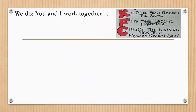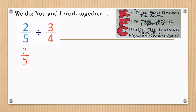Now we're going to work together. What's the first thing we do? Keep the first fraction — write 2/5 just the way it looks. Flip the second fraction — bottom goes on top and top goes on bottom. Change the sign, then multiply: 2 times 4 equals 8, 5 times 3 equals 15. These cannot be simplified, so our answer is 8/15.